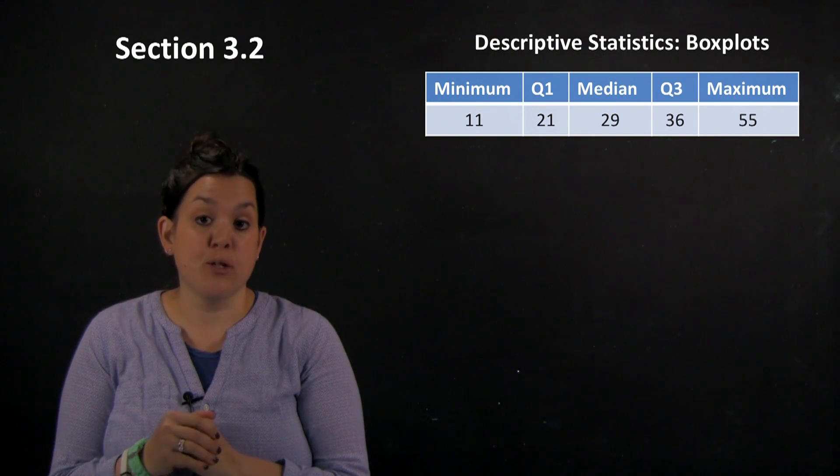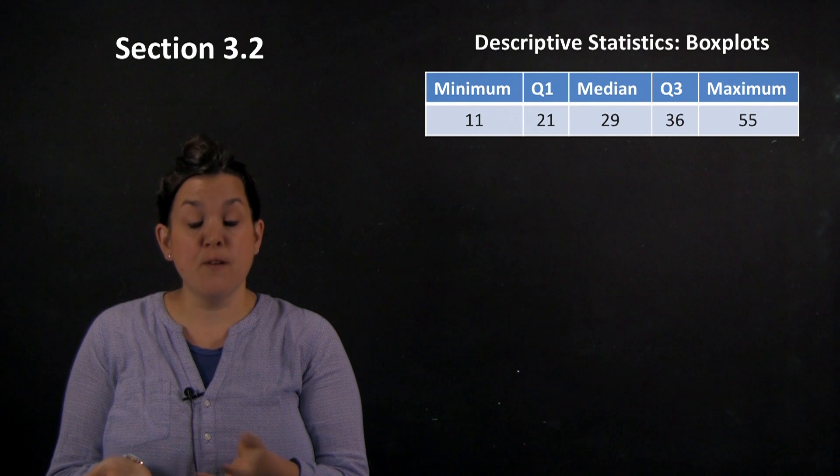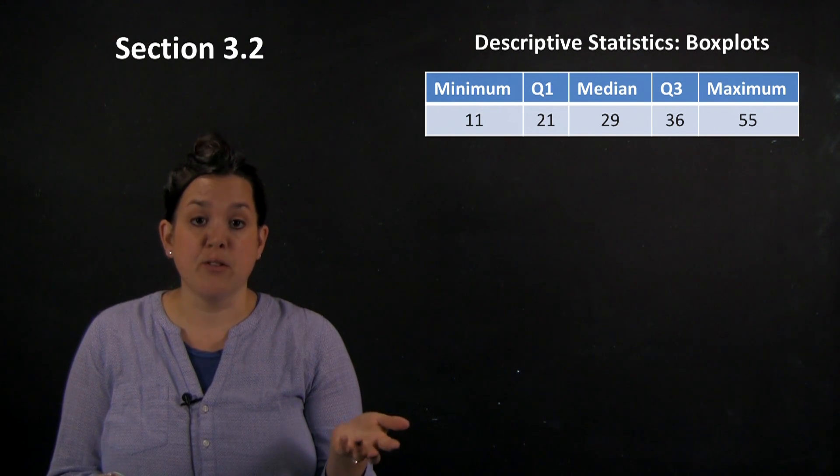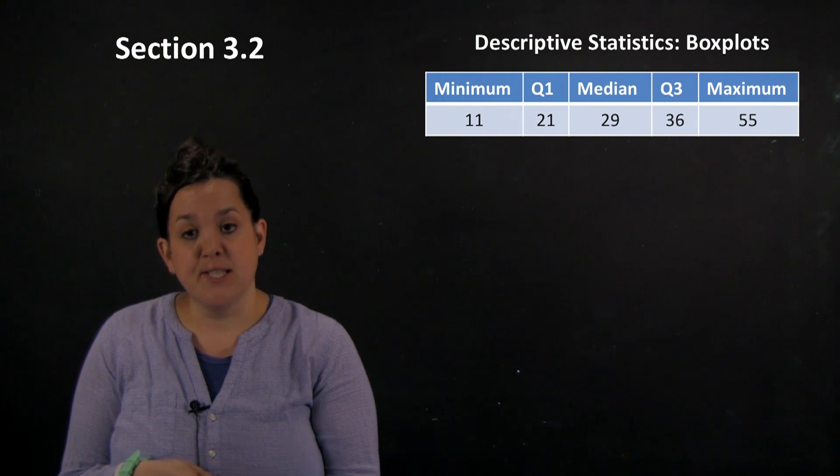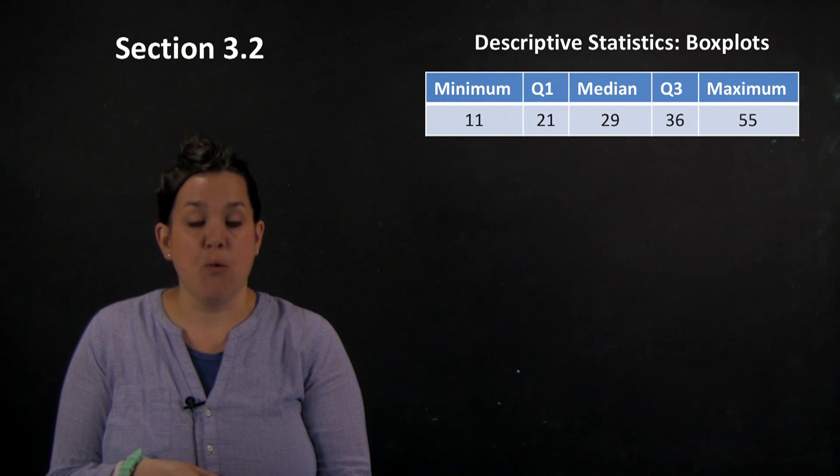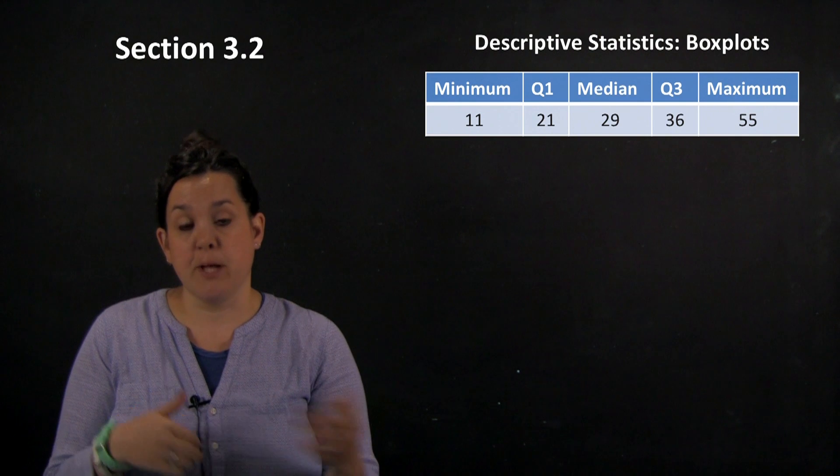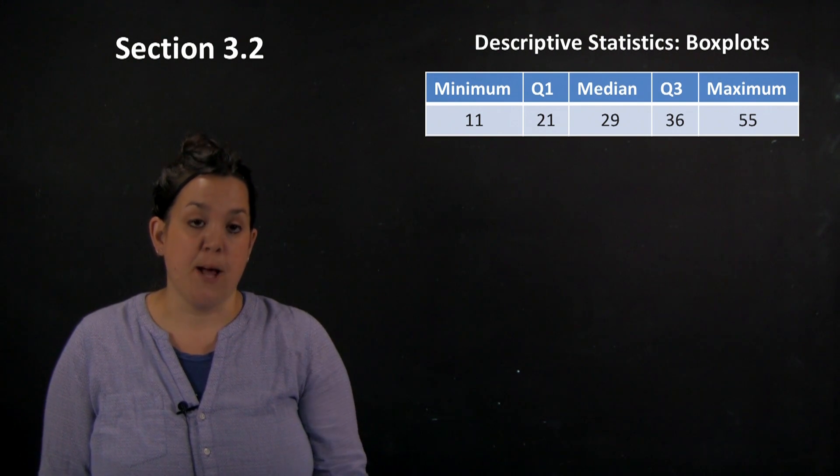So a box plot is a graphical display. Specifically a box plot is a graphical display of the five number summary. So we looked at the five number summary in section 3.1 and today we're going to look at a graphical display of the five number summary using a box plot.